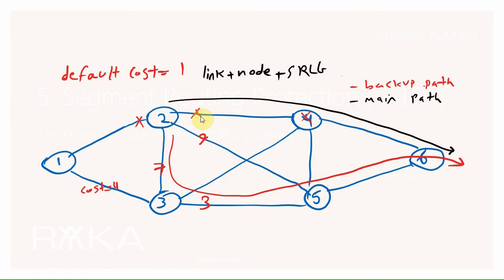But it is not always possible. Sometimes it must choose between node or SRLG protection. Since link protection always has the lowest priority, between node and SRLG we can configure the priority or index value, and one of these two — based on our index value — will replace the main path.